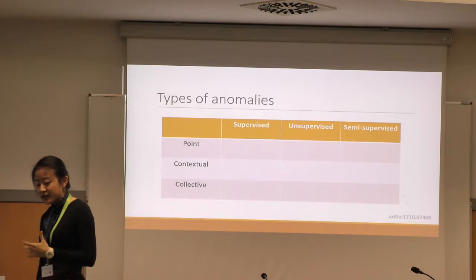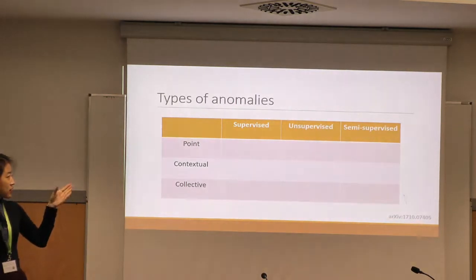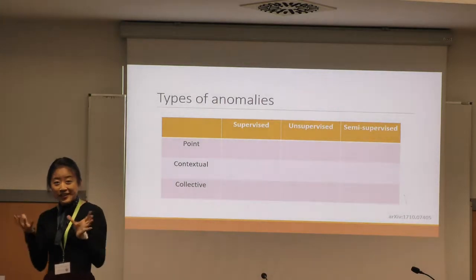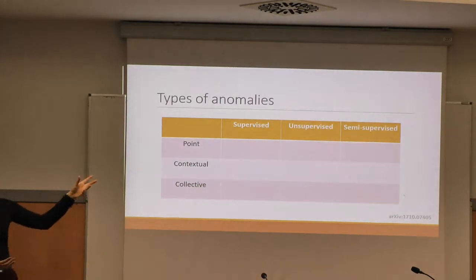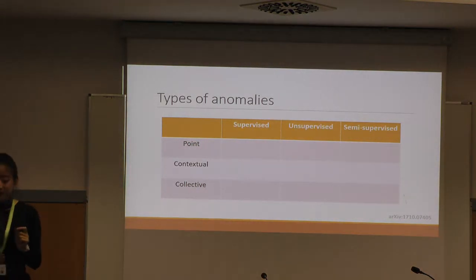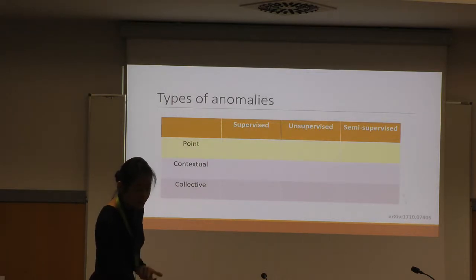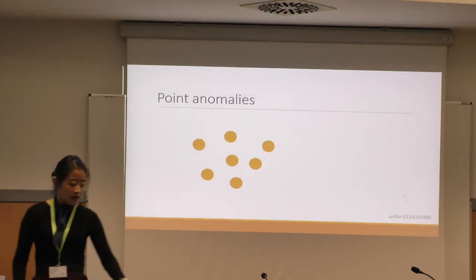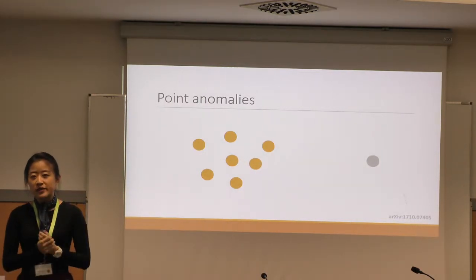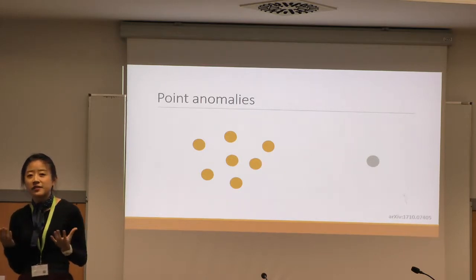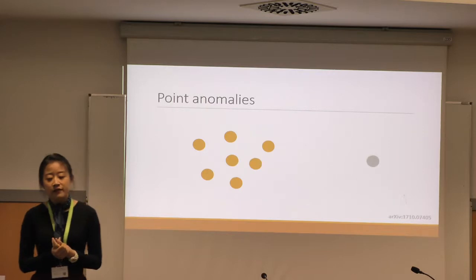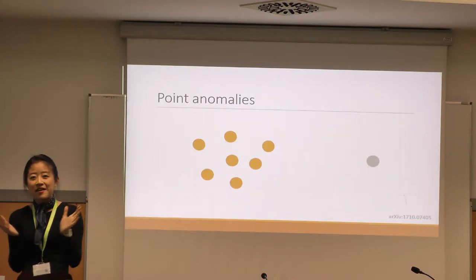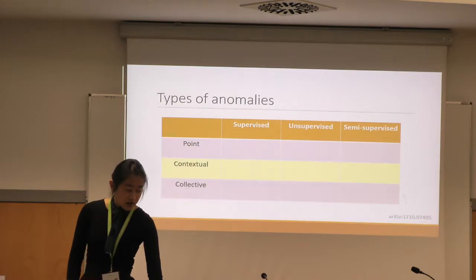There are a lot of different kinds of anomalies, broadly classed into three kinds. You have point anomalies, contextual anomalies, and collective anomalies. And there are also three contexts in which you want to study these: supervised, unsupervised, and semi-supervised learning. A point anomaly is where you're given some collection of normal data and then a single new data point. In the context of medical diagnoses, your normal data might be many copies of healthy lung tissue photographs, and then you're given another photograph and you ask: is this normal? Does this lung have emphysema?